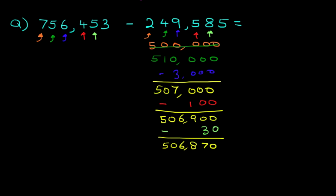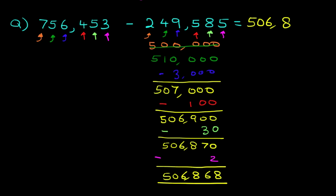And lastly, we have the units. We've got 3 minus 5. 3 minus 5 is minus 2. So we now have 506,868. And that is our answer. 506,868.